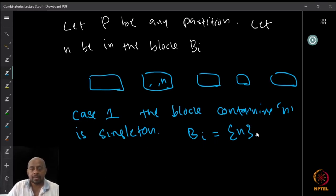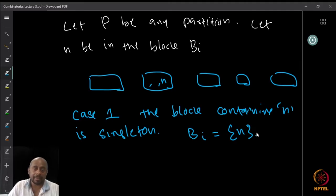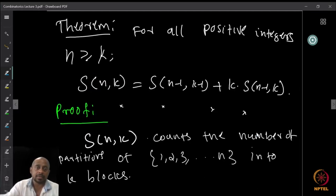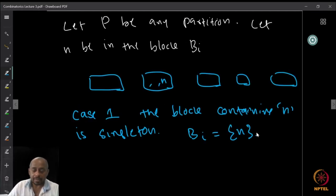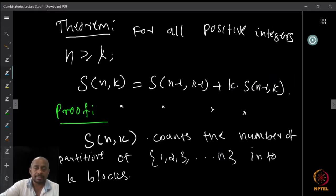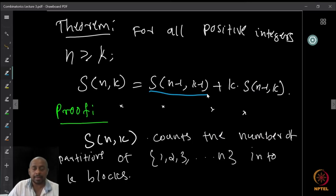For every partition in which n is a singleton, we have a corresponding partition of {1, ..., n-1} having exactly k-minus-one blocks. On the other hand, if you take any partition of {1, ..., n-1} into k-minus-one blocks, you can add a new singleton block {n}, and this will be a partition of {1, ..., n} in S(n,k). Therefore there is a bijection between them.